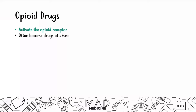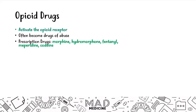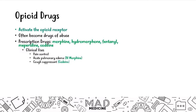You have both prescription and illicit drugs you should know for Step 1. The prescription opioids are morphine, hydromorphone, fentanyl, meperidine, and codeine. These have very similar clinical uses — a lot of them are used for pain control. They can also be used for acute pulmonary edema, in which case that's IV morphine, and as a cough suppressant — that's codeine.